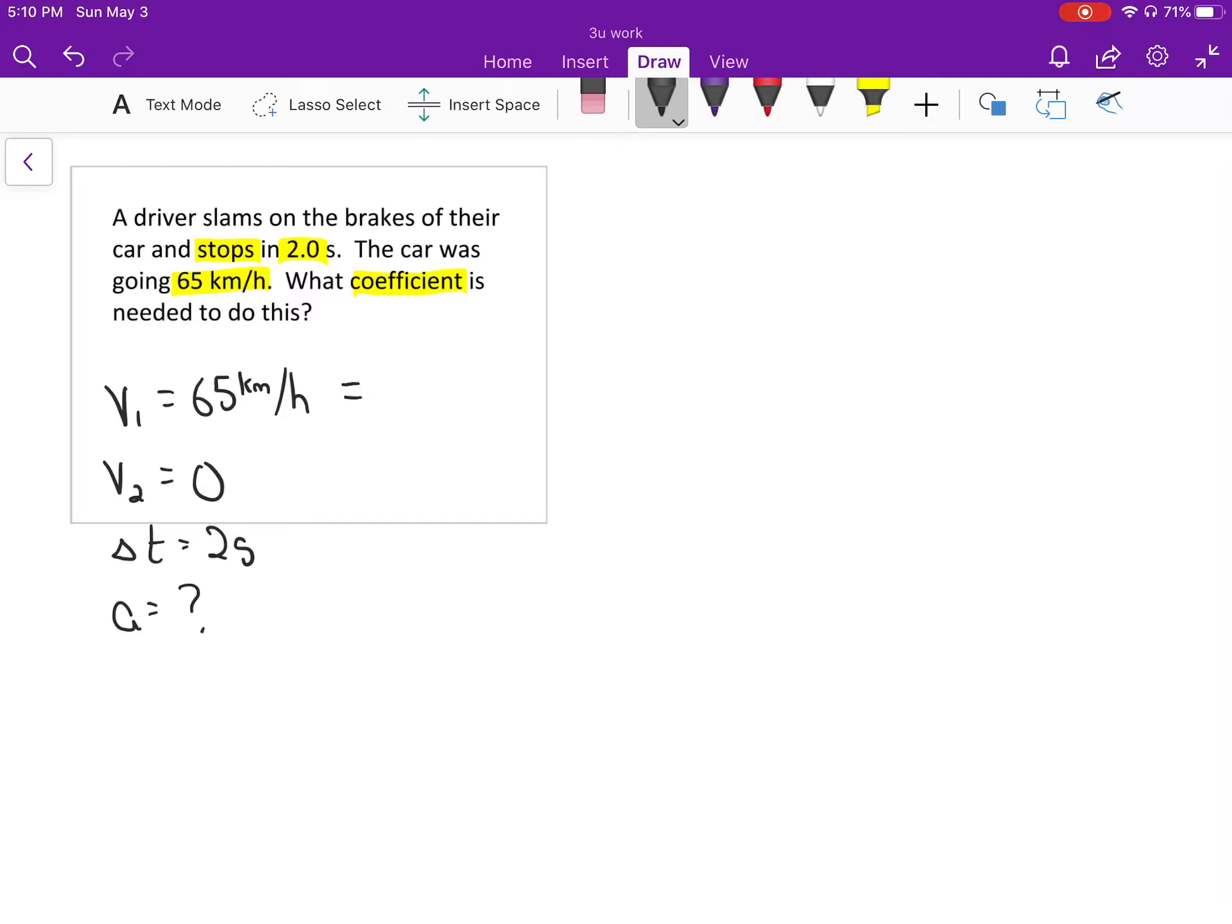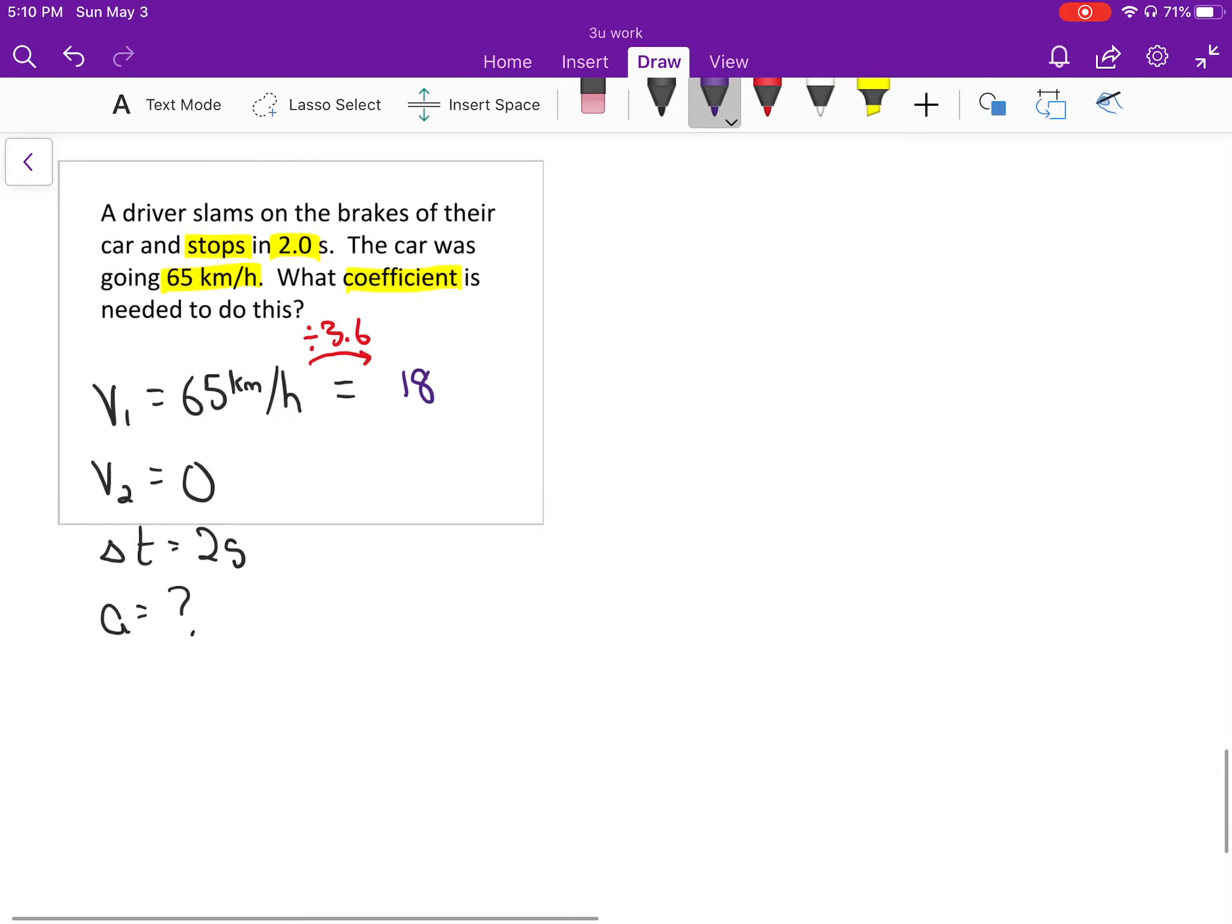The car is going 65 kilometers per hour. It skids to a stop in two seconds. We're going to use all that to figure out the acceleration. As an added wrinkle, I gave you kilometers per hour instead of meters per second. The magic number to go to meters per second, you divide by 3.6. 65 divided by 3.6, I'm going to round it off, that works out to almost exactly 18 meters per second.